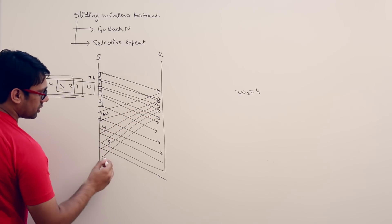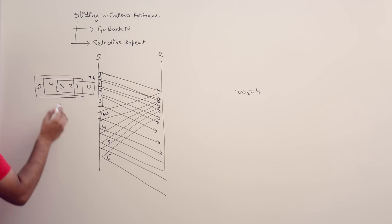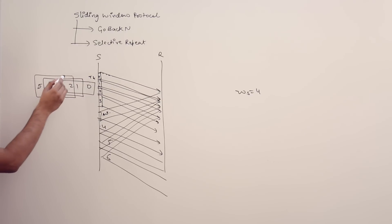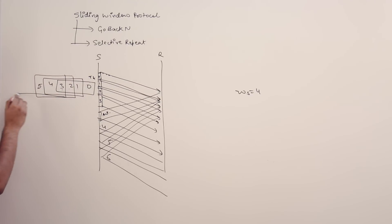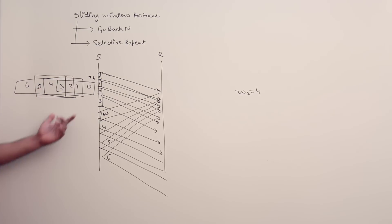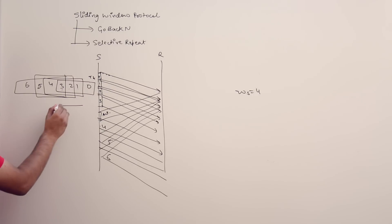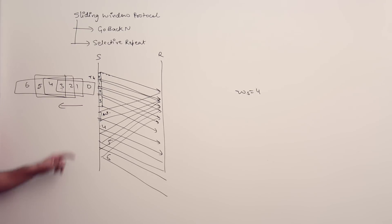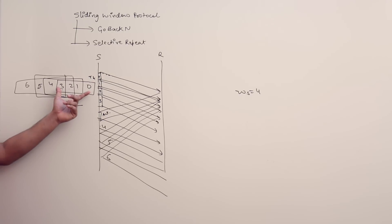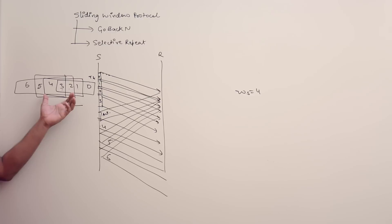As soon as we get the acknowledgement for packet number 2, we transmit one more packet — packet number 6. As you can see, this is like a window that slides in this direction. Initially we were transmitting packets 0, 1, 2, and 3; as soon as packet 0 is acknowledged, we slide the window to transmit packets 1, 2, 3, and 4.